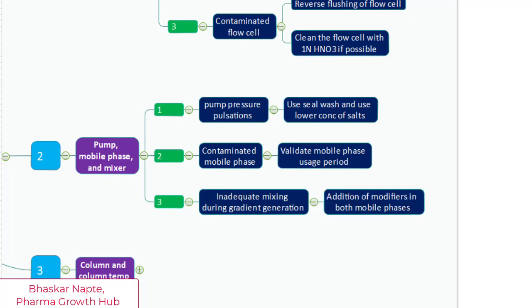Inadequate mixing during gradient generation or even isocratic blending can cause periodic fluctuations of the baseline. Insufficient mixing creates a big problem with the presence of modifiers like TFA or triethylamine. And in case if you are only using these modifiers in the aqueous mobile phase and not into the organic mobile phase, then the pulsation or baseline fluctuations are more.